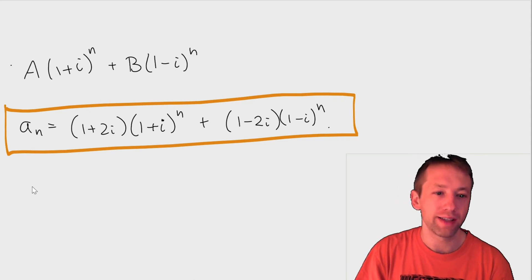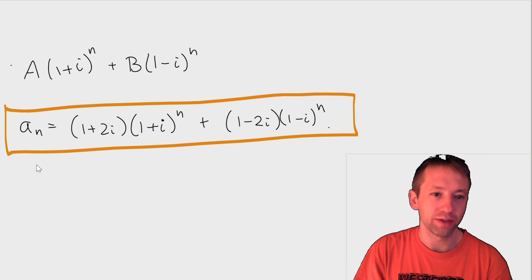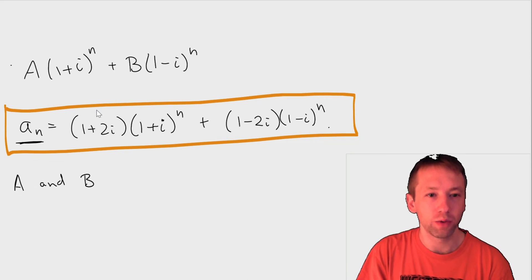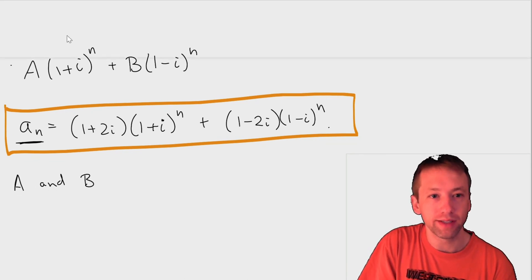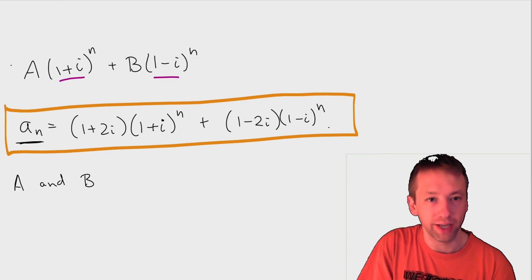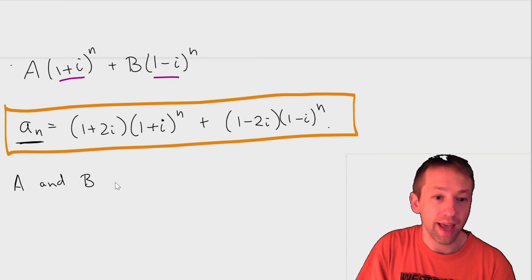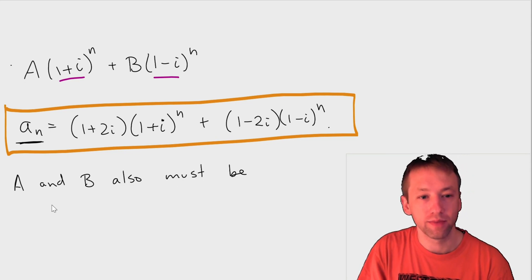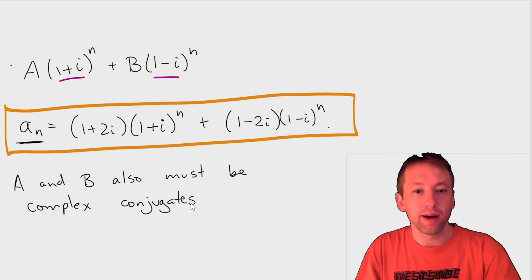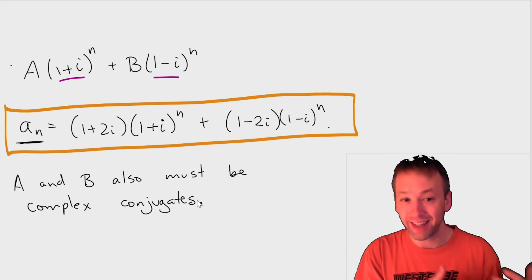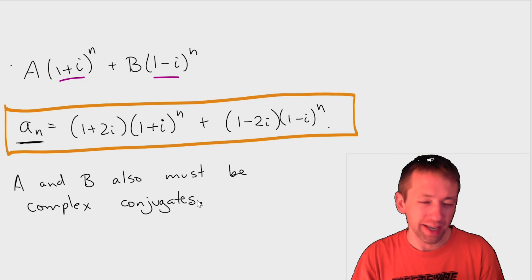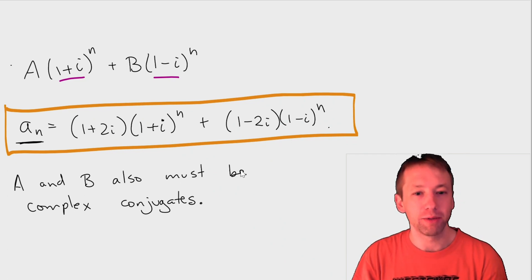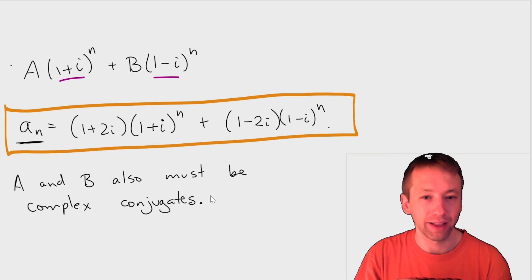One thing I should say is that if your a_n is real, if your sequence a_n is a bunch of real numbers, then A and B, so we know that, first of all, so these numbers here, the roots have to be complex conjugates. And what I'm saying is that A and B also must be complex conjugates. So if you ever end up with a solution where this A and B are not complex conjugates, then you know that there's something wrong there, and you might need to go back and look at your solution.